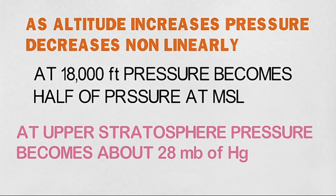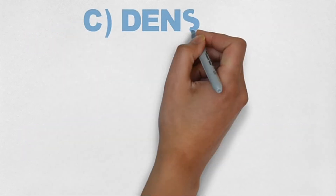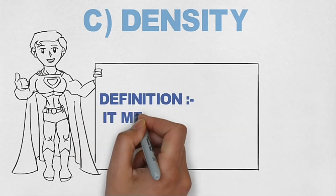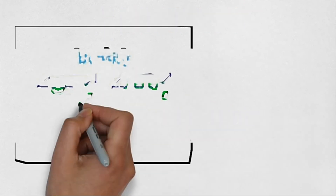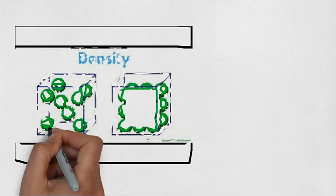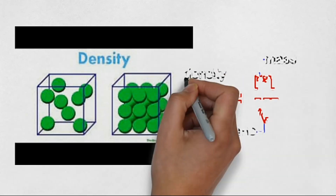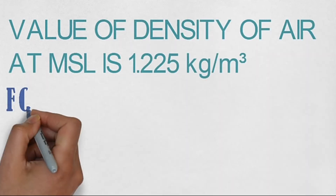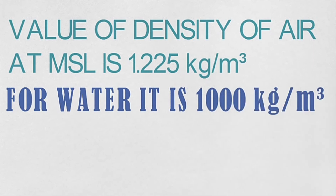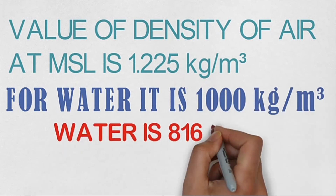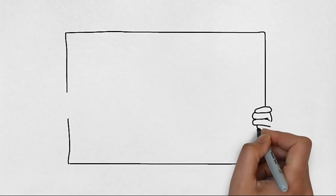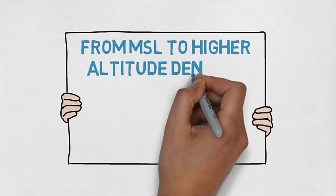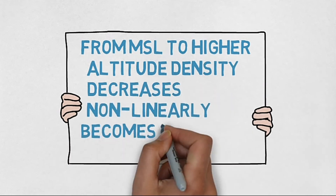Next comes density. Density measures mass per unit volume — the mass of molecules present in a definite volume. The formula is: ρ = mass/volume. The density of air at mean sea level is 1.225 kg/m³, while water is 1,000 kg/m³, meaning water is approximately 816 times heavier than air. As we go from mean sea level to higher altitude, density also decreases non-linearly and becomes half at approximately 23,000 feet.